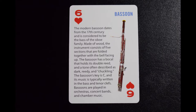The modern bassoon dates from the 17th century and is considered to be the base of the oboe family. Made of wood, the instrument consists of five sections that are folded together with the bell facing up. The bassoon has a vocal that holds its double reed and a tone often described as dark, reedy, and chuckling.